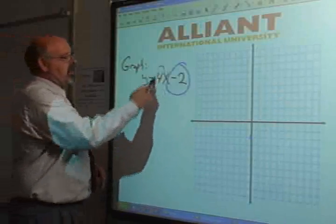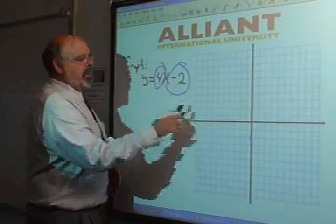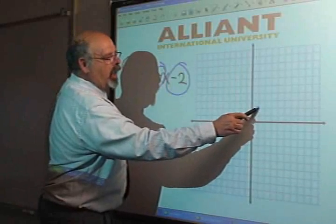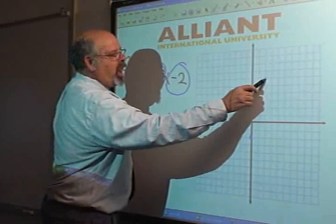The second, this is the slope. It tells you how many to go up: 1, 2, 3, 4 over 1. 1, 2, 3, 4 over 1.